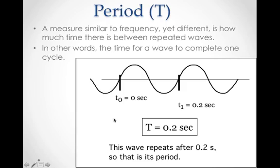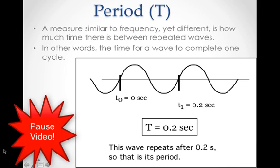The next wave part to talk about is related to frequency, and it's called the period. Measured similar again to frequency, but now it is not how frequently we generate the wave. It is the time for a wave to complete one cycle. So the time from center point to center point here, if that time is 0.2 seconds, that would be the period. Again, the time for a wave to complete one cycle.